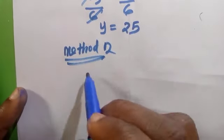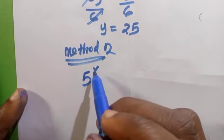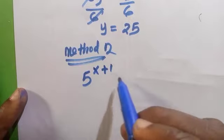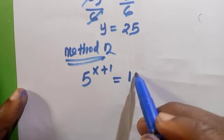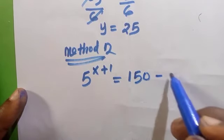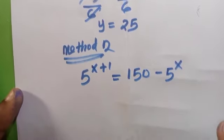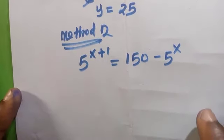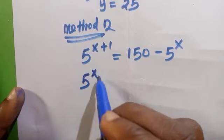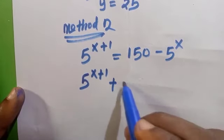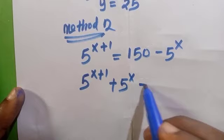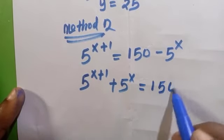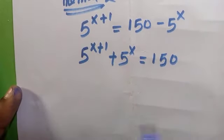So the question is 5^(x+1) equals 150 minus 5^x. So let's take 5^x to the left hand side, then we have 5^(x+1) plus 5^x equals 150.